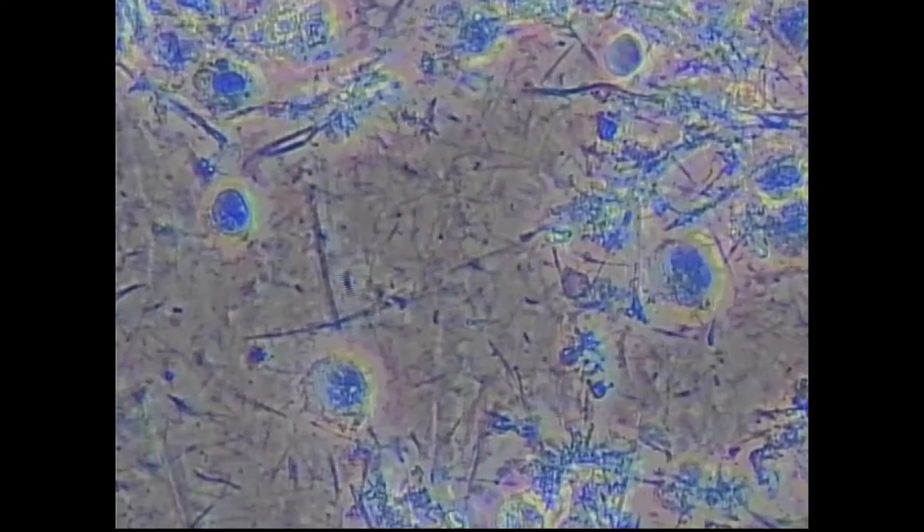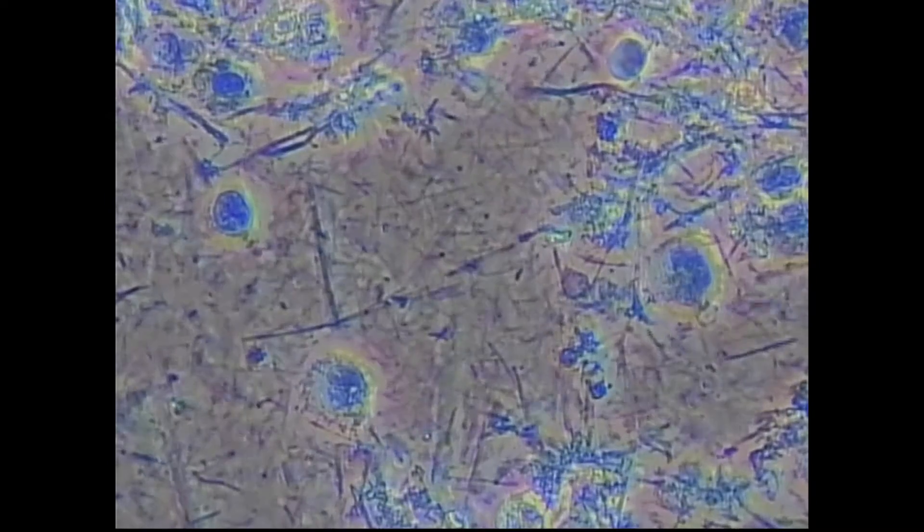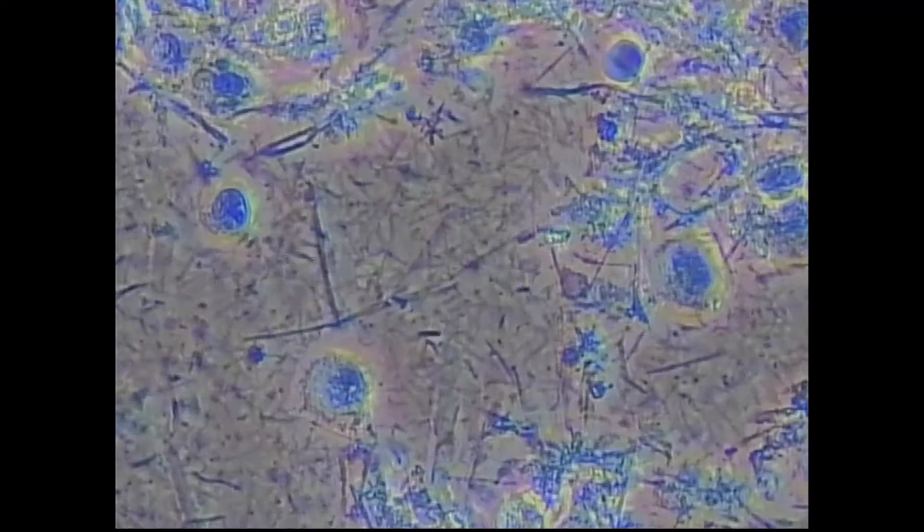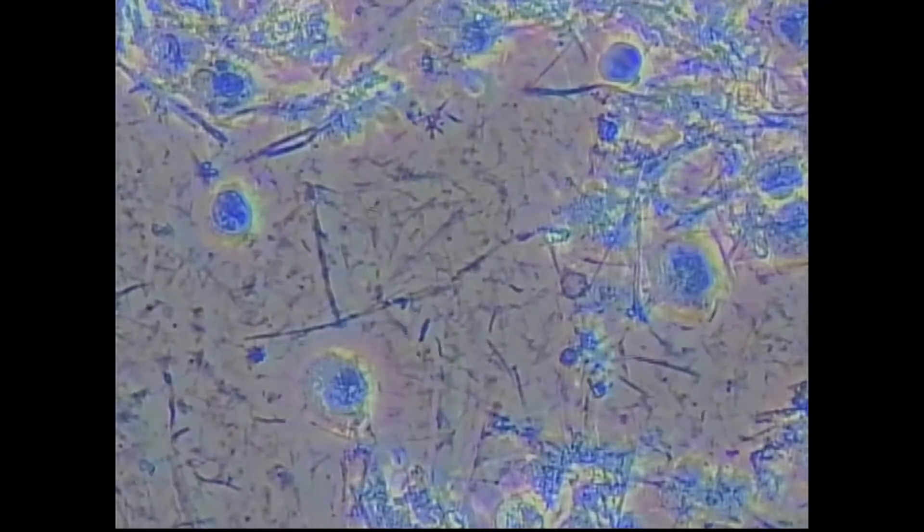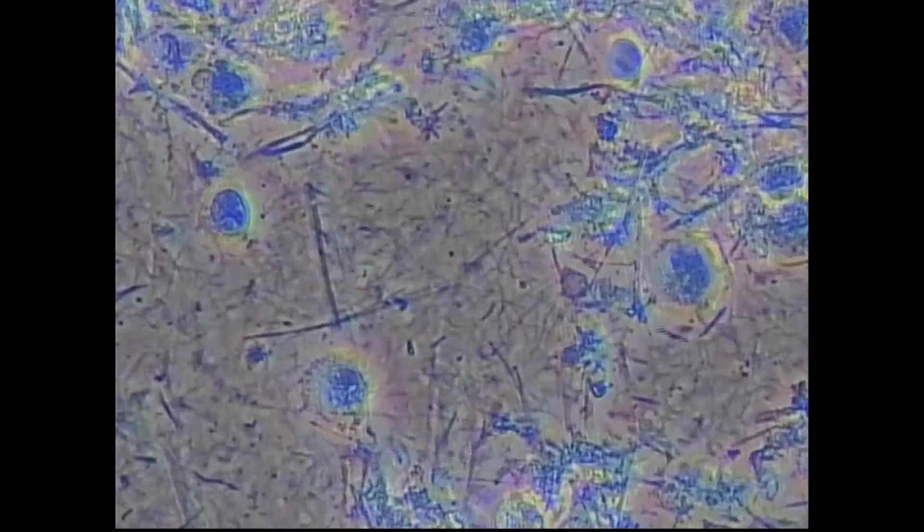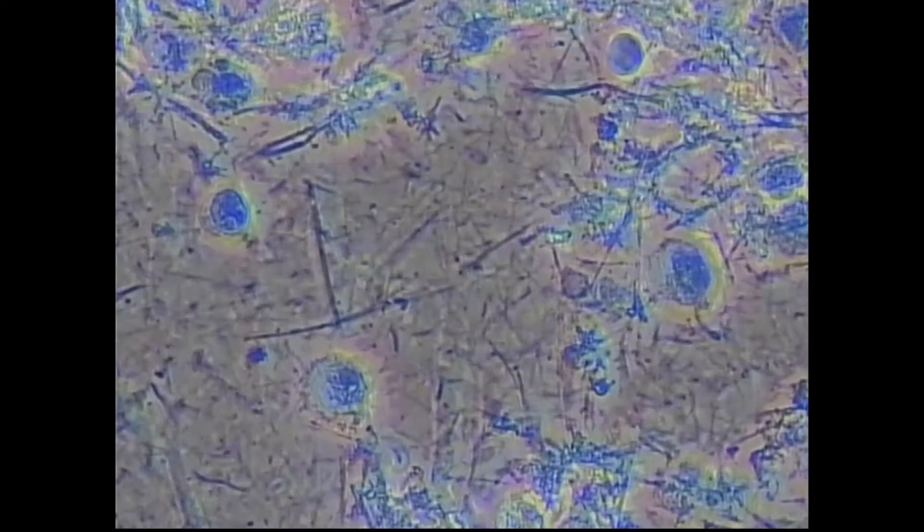But the spirochetes are very unique in that they have a pleomorphic form, or they have a cyst form, and those cysts or spore-like forms get embedded into the epithelium. And so what happens is they can coil up and lose their cell wall and avoid antibiotics.